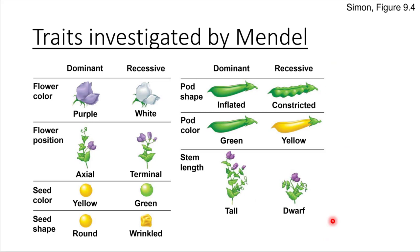Some of the traits that Mendel looked at specifically are shown on this slide. He investigated the color of the flowers — whether they were purple versus white — and through his experiments he discovered that white is the recessive trait and purple is dominant. He also looked at the position of the flowers, whether they're at the ends of the stalks or midway down. He looked at the seeds: what color they are and what texture or shape they have, either smooth and round or shriveled and wrinkly. He also looked at details about the pods and how tall the plants are, the lengths of the stems.